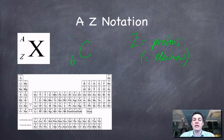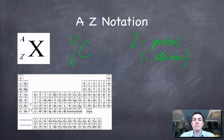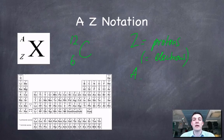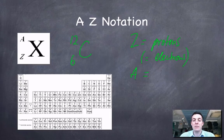We've also got this symbol here called A. I could choose a particular atom of carbon which has an A of 12, meaning its mass number is 12. And if you cast your mind back to where we said that it was the protons and the neutrons that were heavy particles in an atom, we can get some clue as to what the mass number tells us, because the protons and neutrons are defining the mass of an atom. So the mass number A is equal to the number of protons plus the number of neutrons.